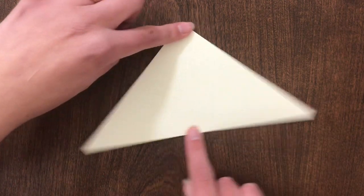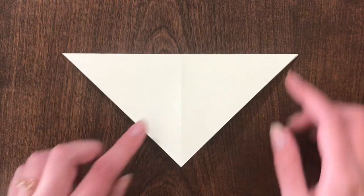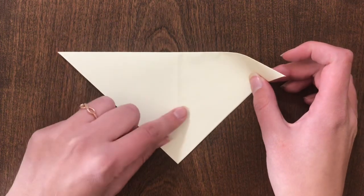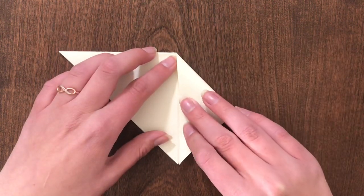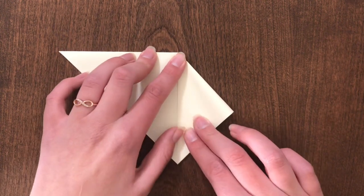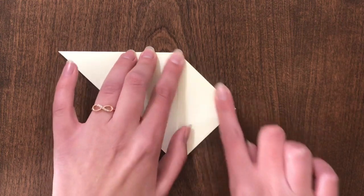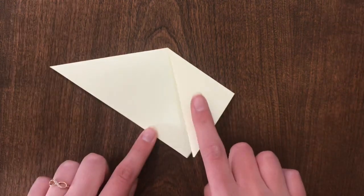Turn your paper so that the triangle points down. Fold the edge of the triangle down so that it meets the center line. Do this on both sides.